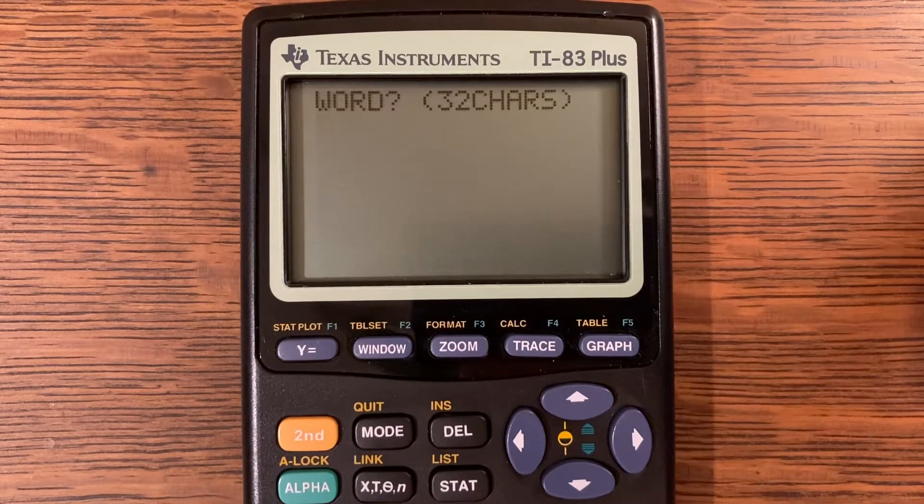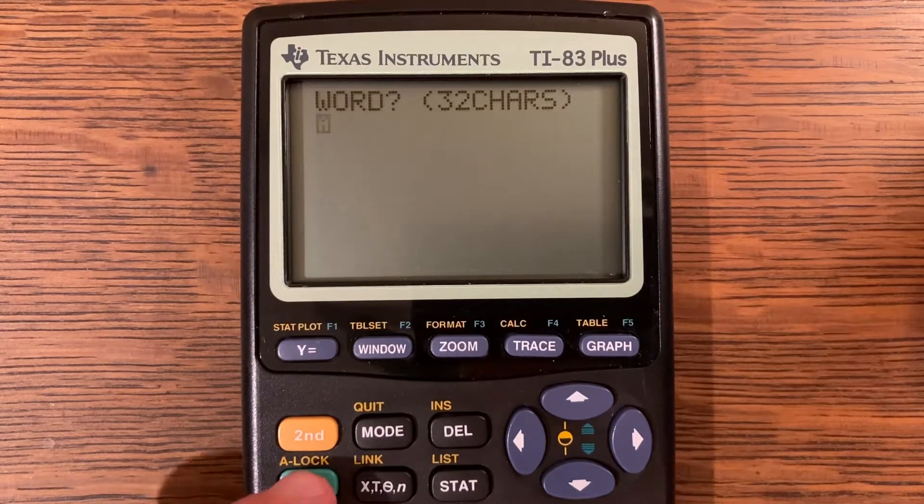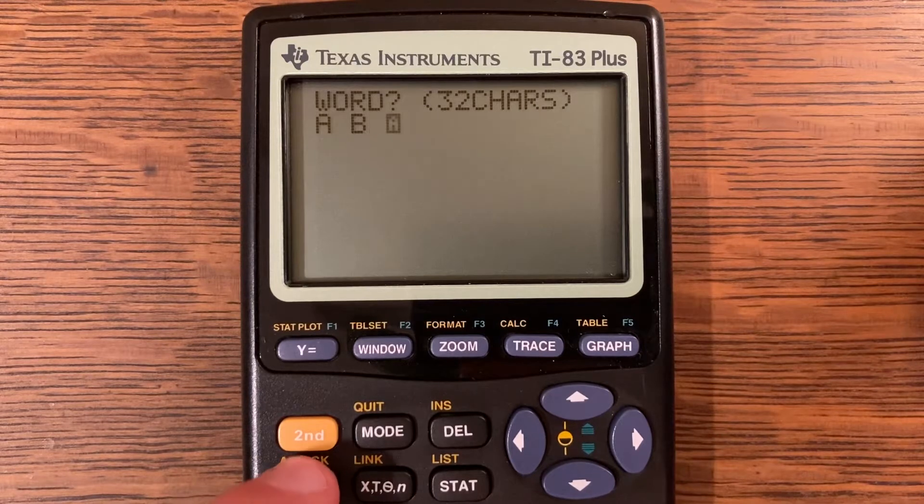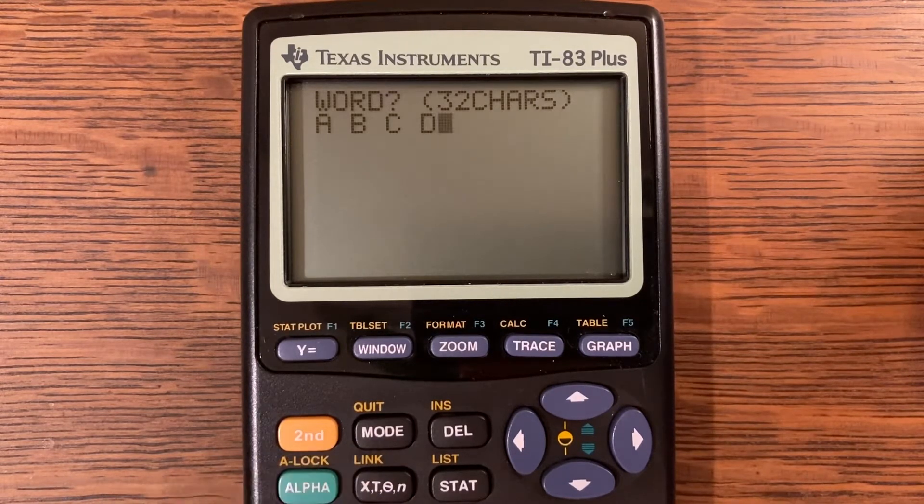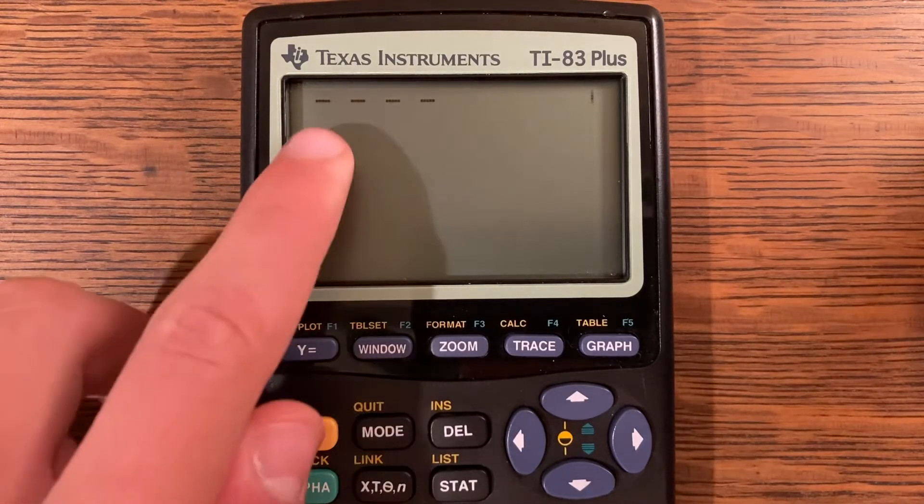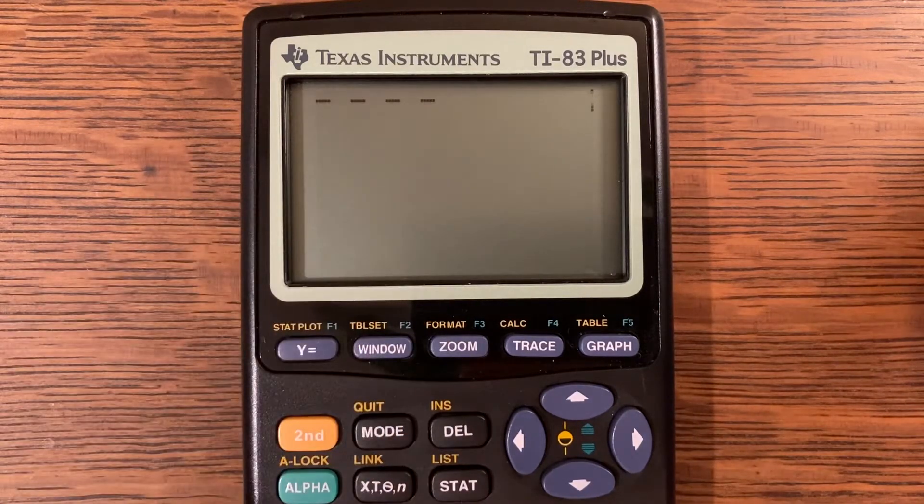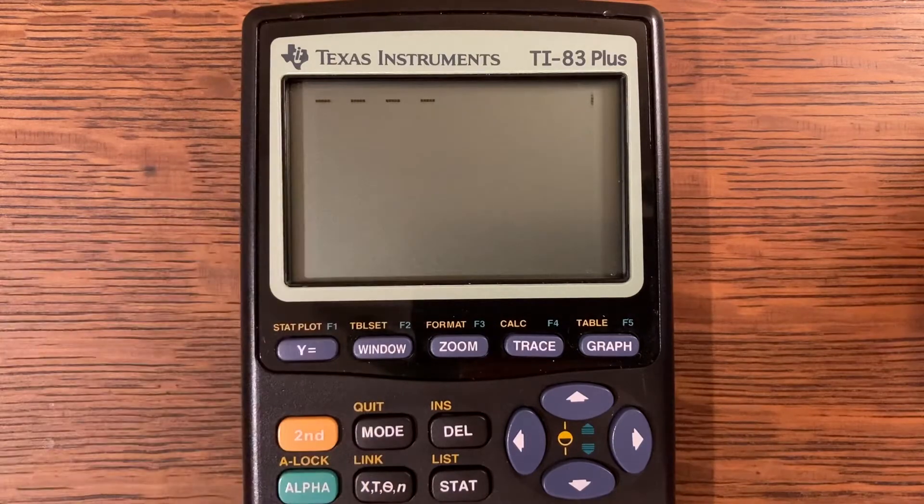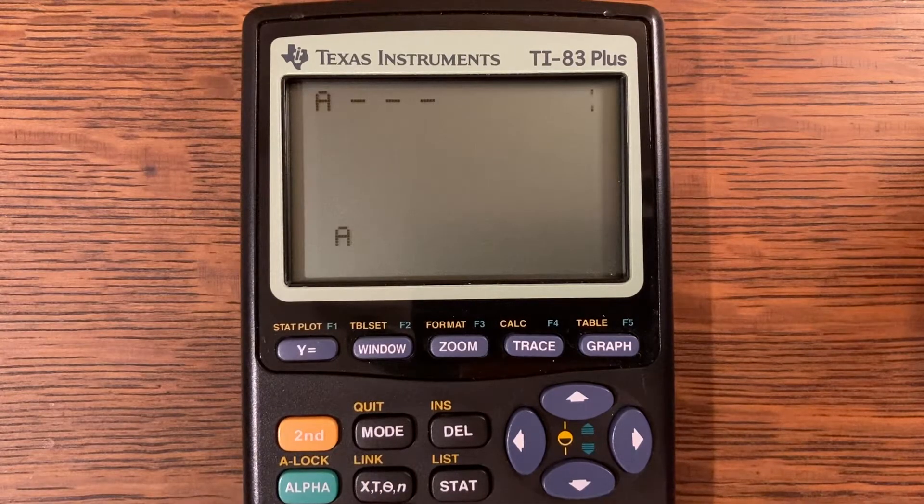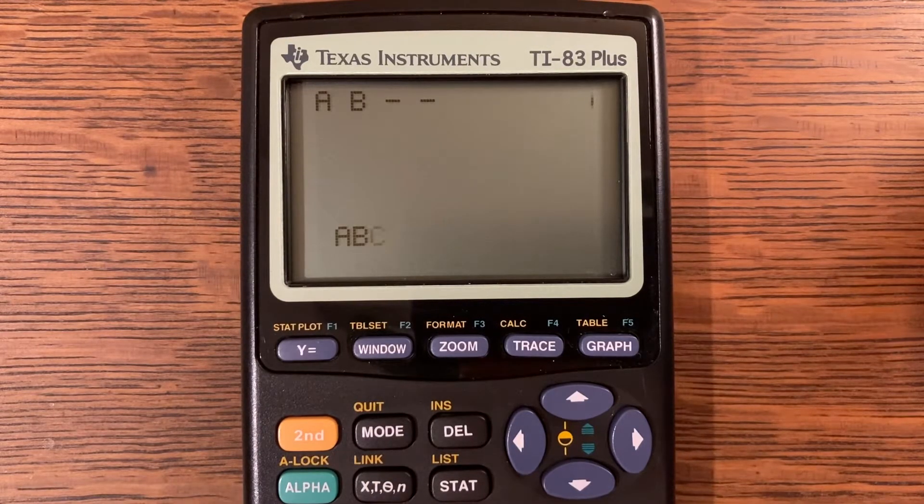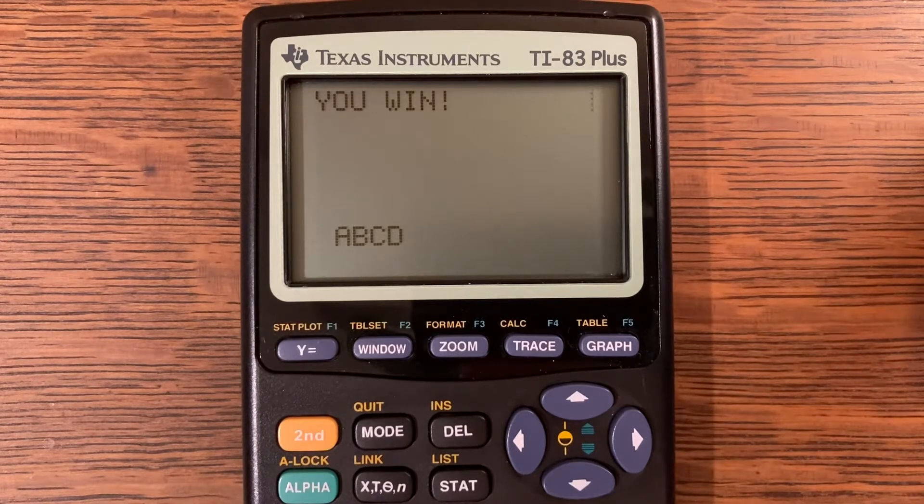I'm just going to quickly show you, I'll just do like an A space B space C space D. You'll see that it will put spaces in as well here, and you can do multiple letters. If I still guess, the program will still work and I will win if I get all of those letters correct.